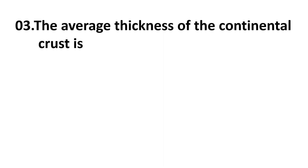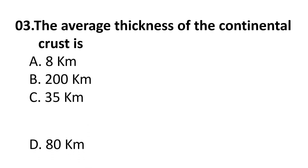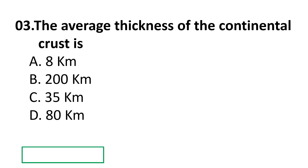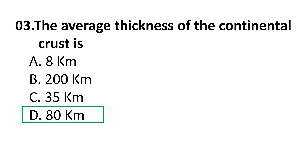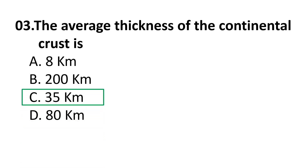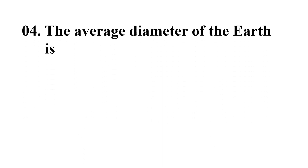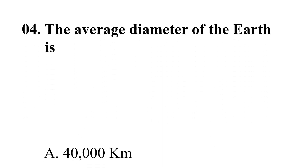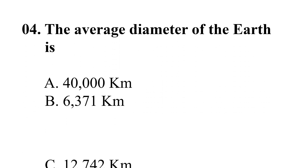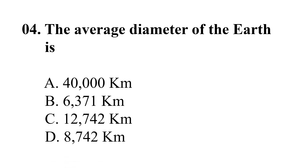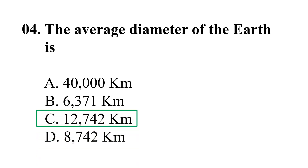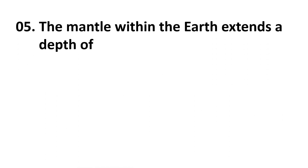Coming to the third question: the average thickness of the continental crust — choices are: A) 8 kilometers, B) 200 kilometers, C) 35 kilometers, D) 80 kilometers. The correct answer is C: 35 kilometers. Fourth question: the average diameter of the Earth is — A) 40,000 km, B) 6,371 km, C) 12,742 km, D) 8,742 km.